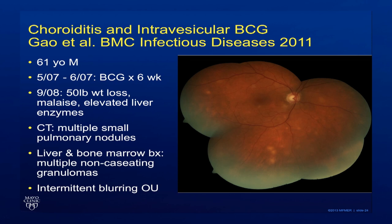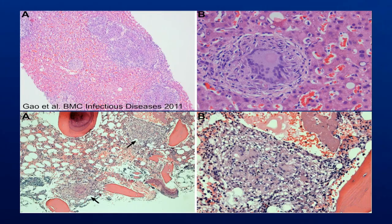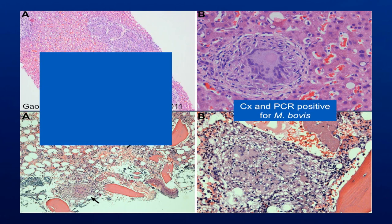This is a photograph from a paper published by Gow et al of a patient treated with intravesicular BCG who also developed pulmonary nodules as well as liver and bone marrow involvement. Biopsies showed multiple non-caseating granulomas. The photograph is a partial color montage which shows some deep choroidal lesions similar to those observed in our patient. The histopathologic slides show the top two from the liver and the bottom two from the bone marrow, demonstrating the non-caseating granulomas. In this case both culture and PCR were positive for Mycobacterium bovis.